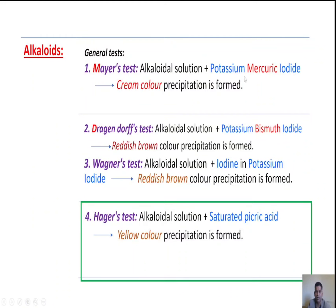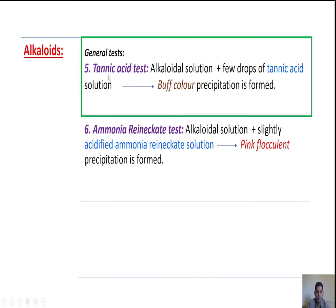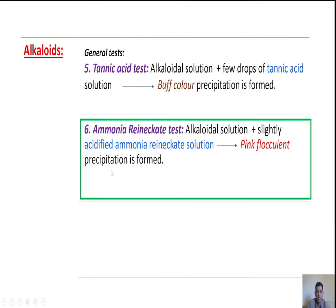To remember: Mayer's reagent is potassium mercuric iodide — 'M' for Mercury. Dragendorff's reagent is potassium bismuth iodide — 'D' is near 'B' for Bismuth. Wagner's reagent is iodine in potassium iodide. Fifth, tannic acid test: the alkaloidal solution treated with a few drops of tannic acid solution produces a buff-colored precipitate. Last, ammonium reineckate test: the alkaloidal solution treated with acidified ammonium reineckate solution produces a pink flocculent precipitate.